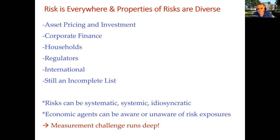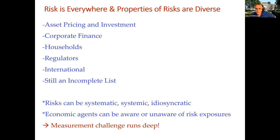I like to think of theory as telling us that risks can really come in different flavors, and we've got to keep that in mind as we go through measurement exercises. I think of risks as being systematic — the asset pricing literature gets into priced risk and pervasive risks. There's also systemic risk, which is different from systematic, because it's really about the whole system suddenly blowing up in a jump-like process. And then there's idiosyncratic risk, which we think of as diversifiable, but it still matters because individual companies are exposed to it and have to think about how they change their policies.